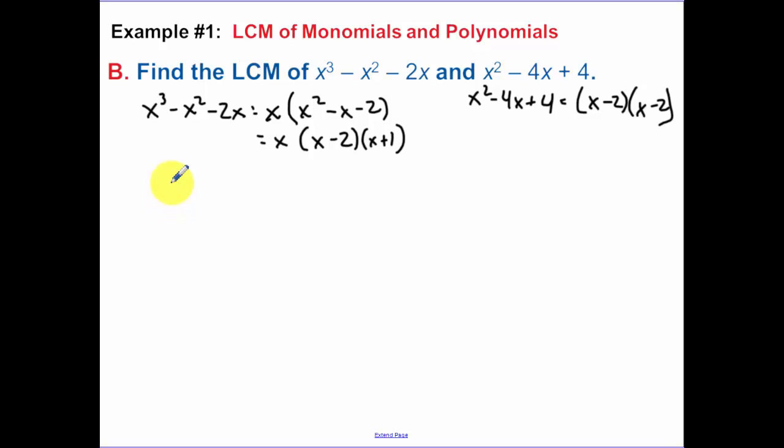Now again, your least common multiple has to have everything that's in both denominators. So I have an x in this denominator. I think about them as denominators, honestly. I have an x here, so that's part of my least common multiple. I have x minus 2 in this one. I also have x minus 2 in that one. But I actually have 2 x minus 2, so I need to take that higher multiple. And then I also need to add in this x plus 1. So that's our least common multiple.